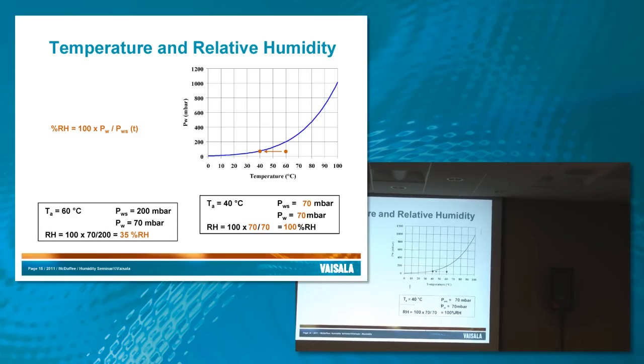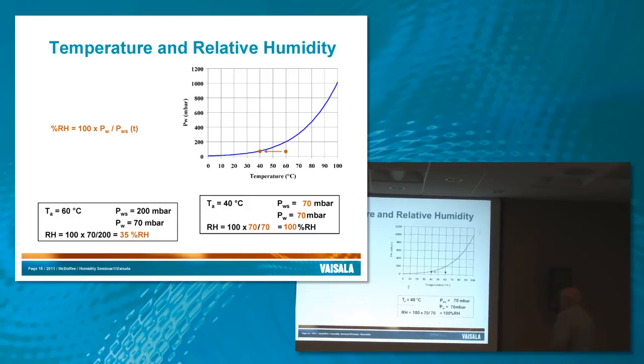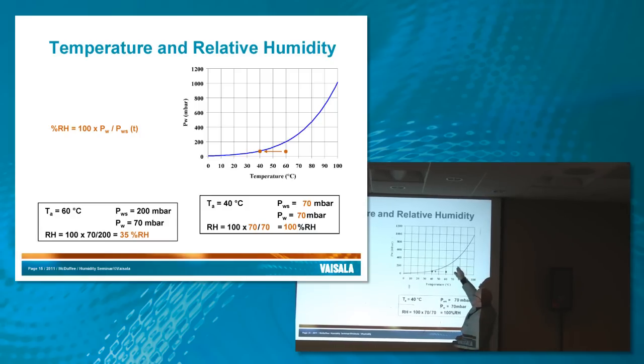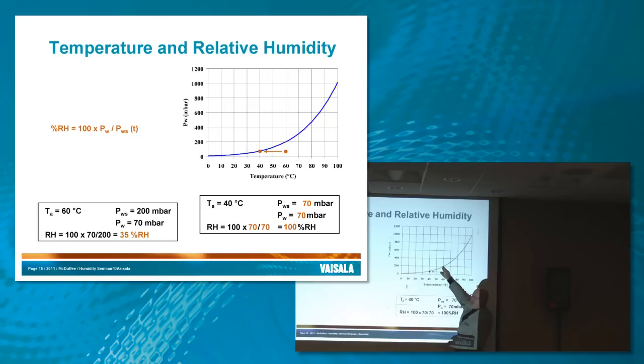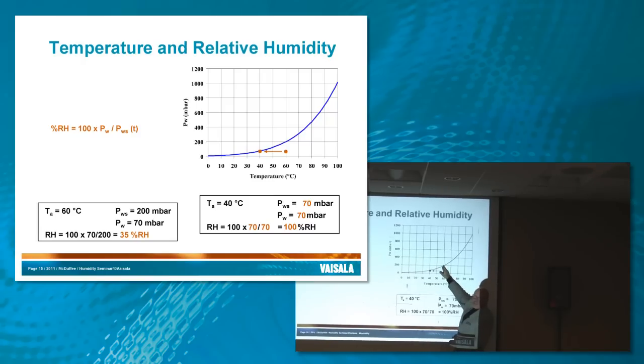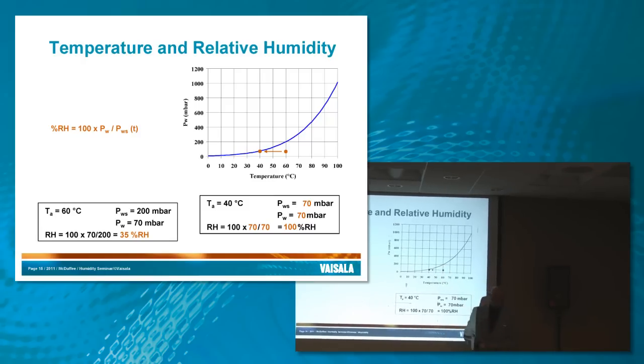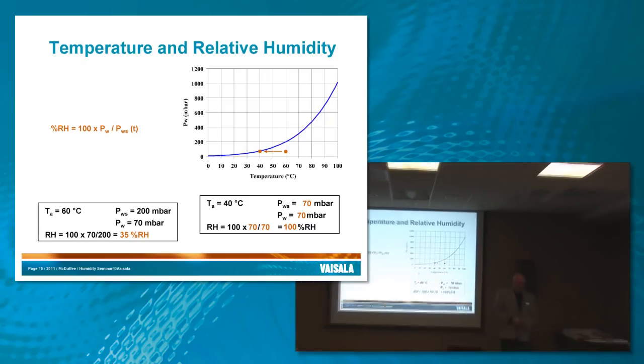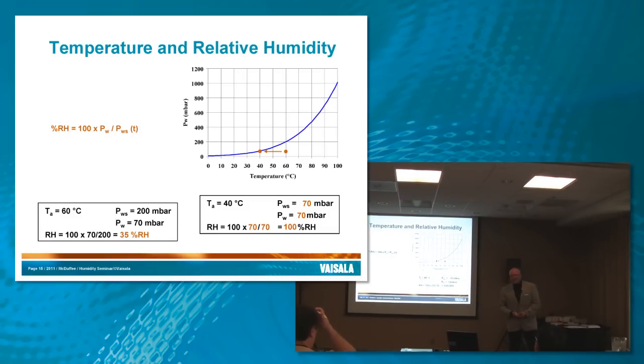So our RH is 100%. So as we continue to go down, cool the temperature, wherever we are here, when we cool the temperature, as soon as we hit the saturation curve, we get condensation, because there's no more capacity.